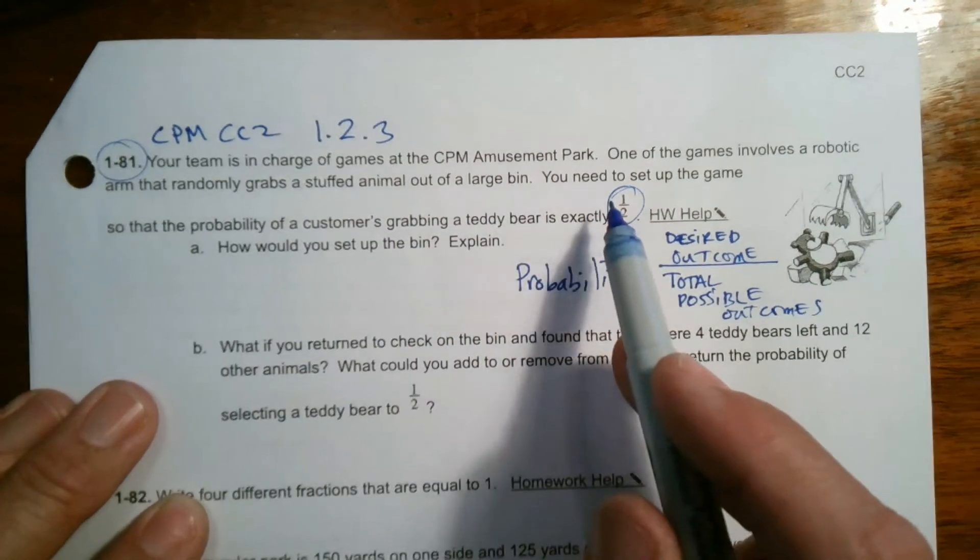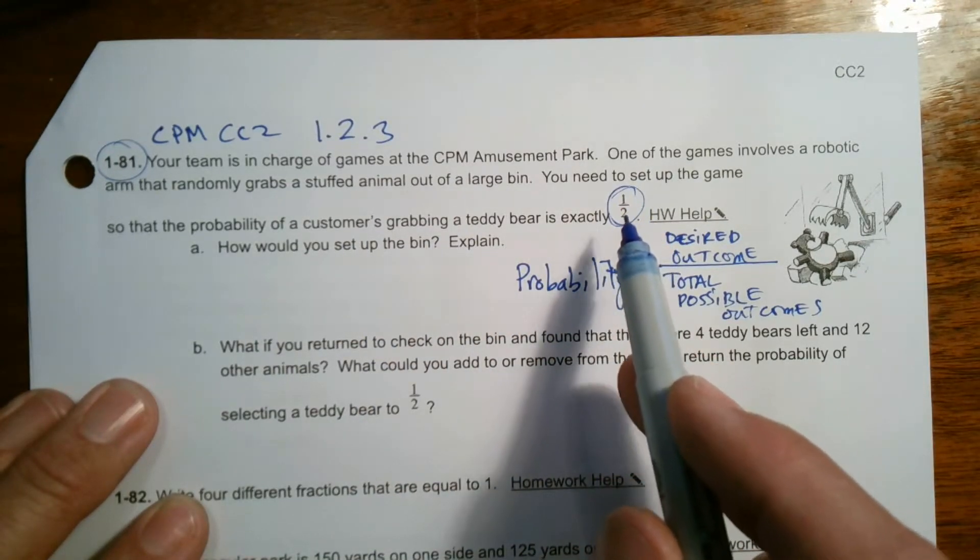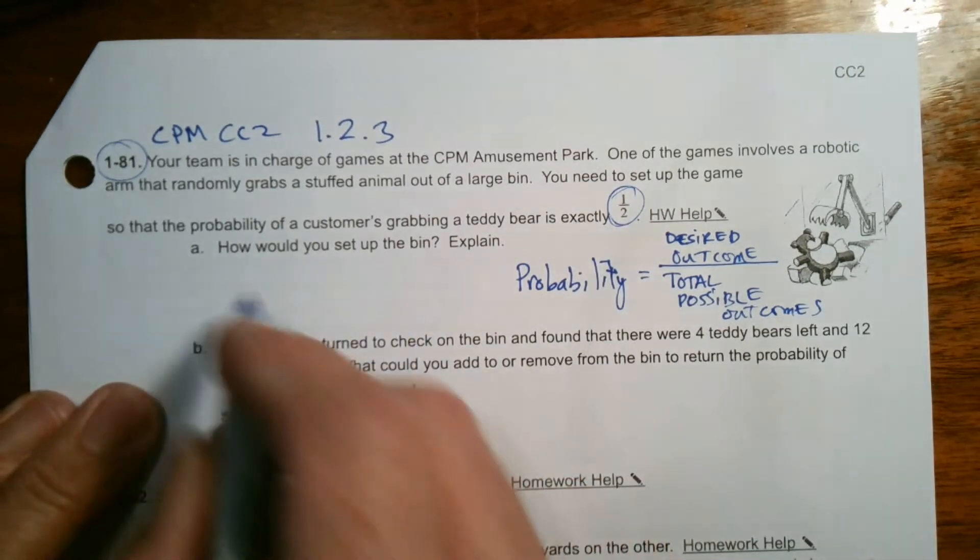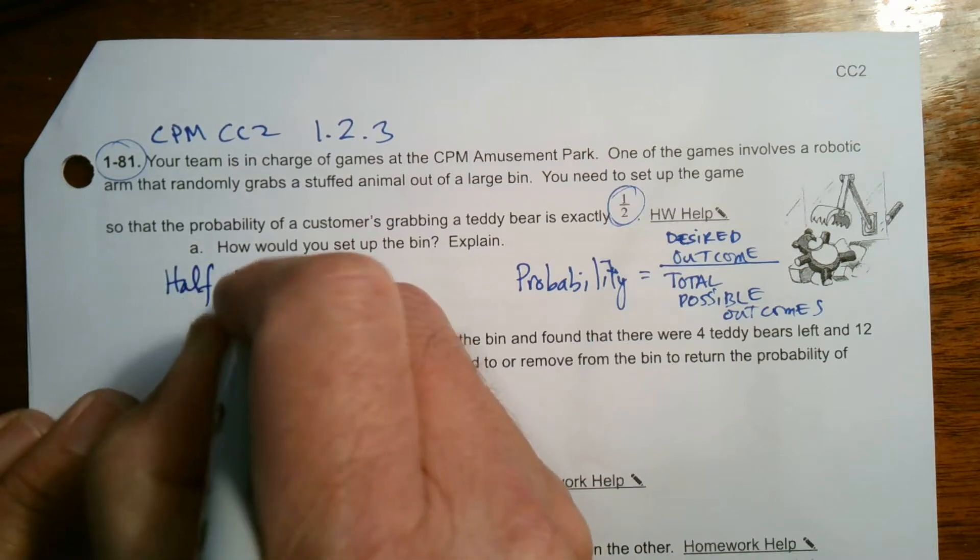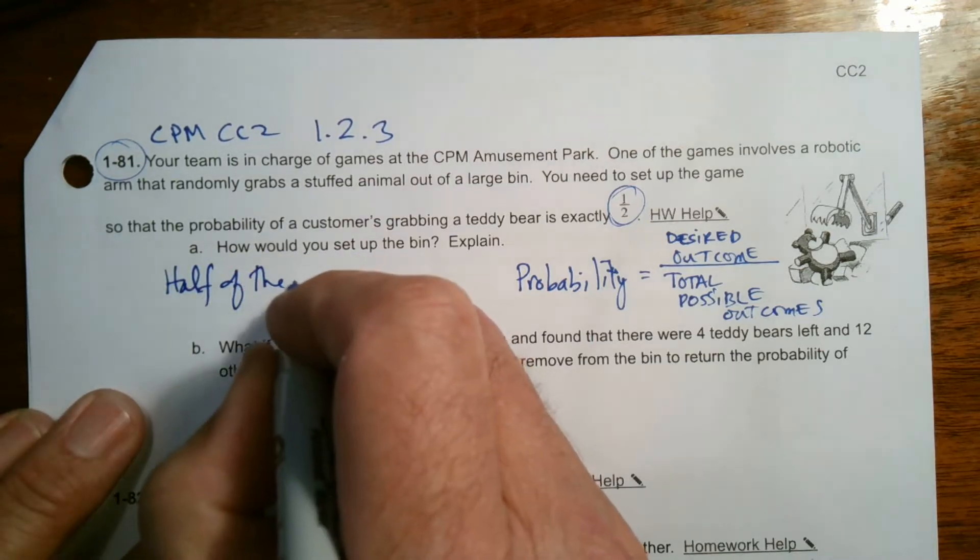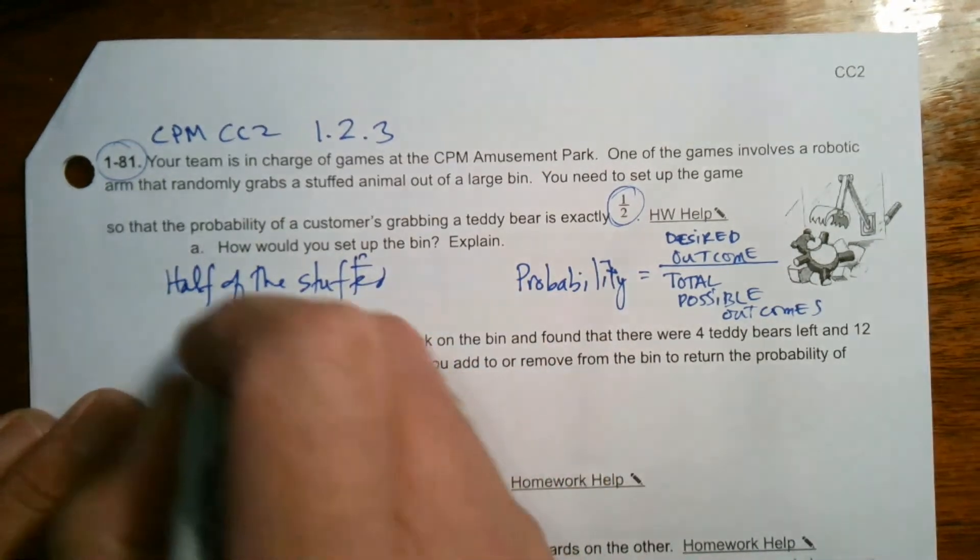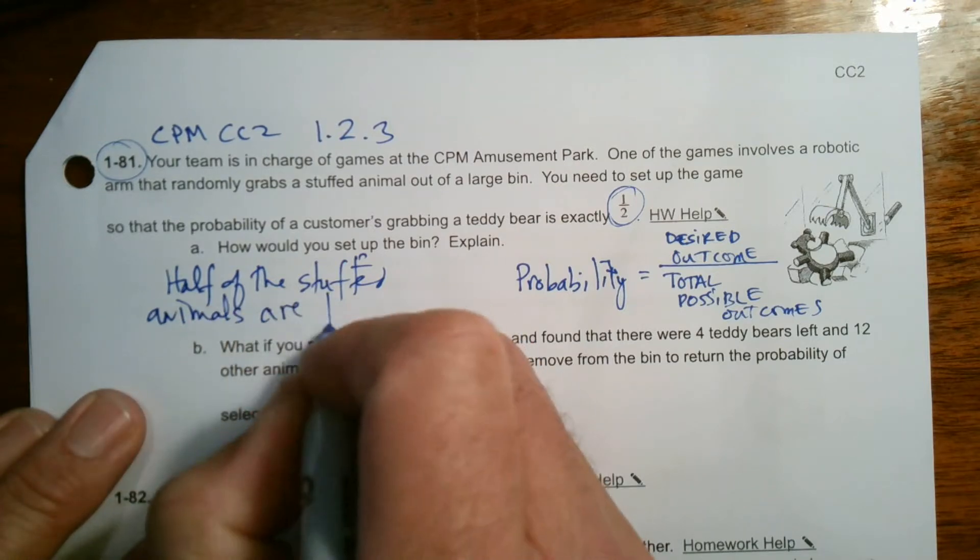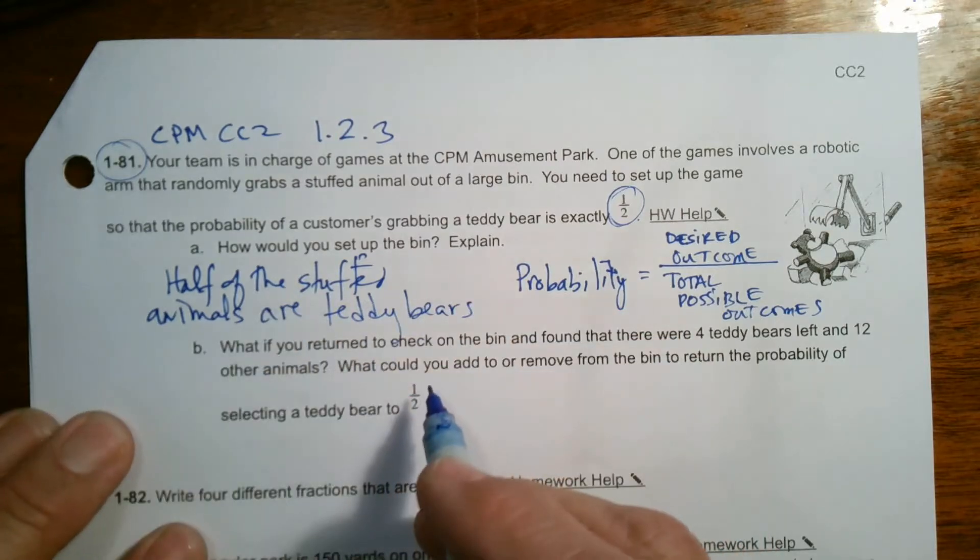So in this case, if we want the probability to be one over two, we want one teddy bear out of all the possible stuffed animals. So how do we set it up? We have to make sure that half of the stuffed animals are teddy bears.